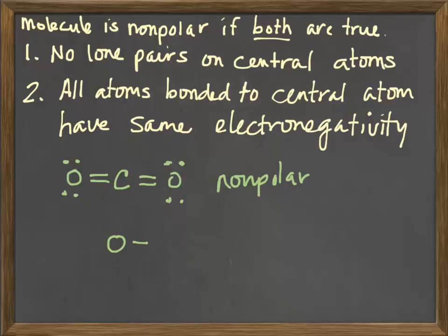Let's look at water. Lewis structure for water: are there lone pairs on the central atom? Yes. We're done - this is polar. It doesn't matter that the hydrogens are the same. The lone pairs cause asymmetry in the molecule, pushing the hydrogens so it can't be linear or symmetrical. Asymmetry with polar bonds leads to polar molecules.